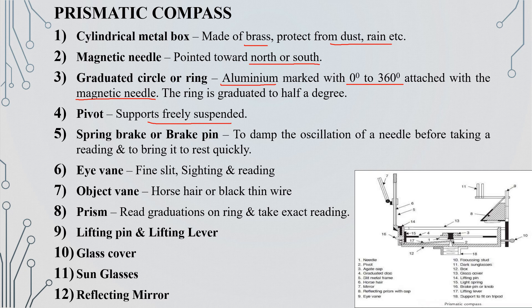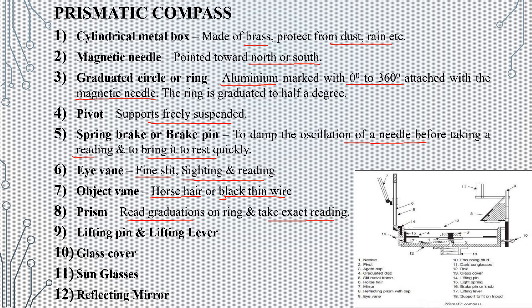The components of the prismatic compass include: a spring brake pin, an eye vane which has a finite slit for taking readings, an object vane which contains a horse hair or thin wire in black, a prism for exact readings, a lifting lever, a glass cover, a sunglass, and a reflecting mirror.